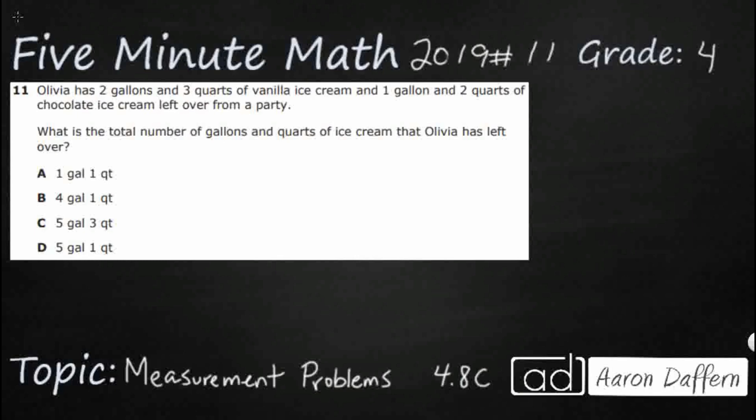Olivia has two gallons and three quarts of vanilla ice cream, one gallon and two quarts of chocolate ice cream left over from a party. We need the total number, which tells us we're going to add. What's the total number of gallons and quarts of ice cream that Olivia has left over?